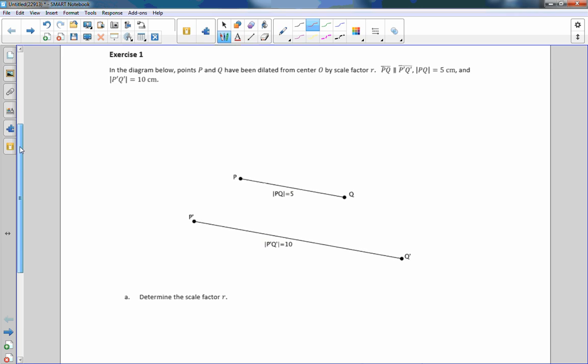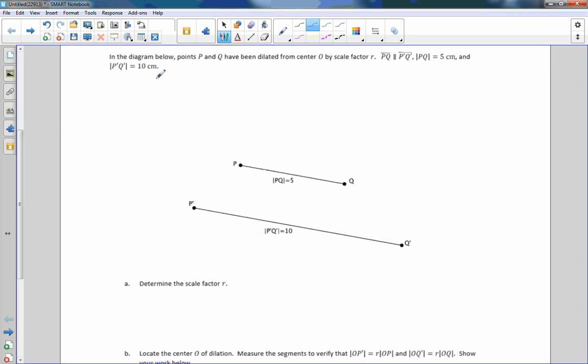Okay, so I'm going to take a look at this now. It says in the diagram below, point P and point Q has been dilated from a center O by a scale factor of R. We don't know the scale factor. Segment PQ is parallel to segment P prime Q prime. So this is parallel to that. Length of PQ is 5 centimeters and the length of P prime Q prime is 10 centimeters.